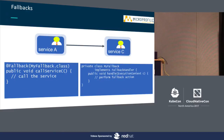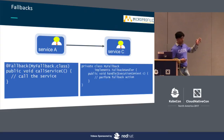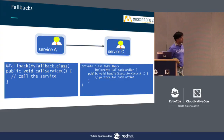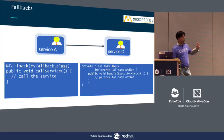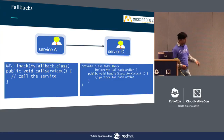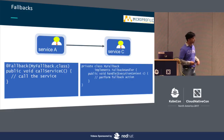There is another very useful MicroProfile annotation which is fallback. Yes, things will go wrong — but what do we do when something goes wrong? Instead of doing X, can we do Y? Fallback is an annotation where you can define: if this particular thing is not reachable, timing out, or delayed, let's do this alternative instead.